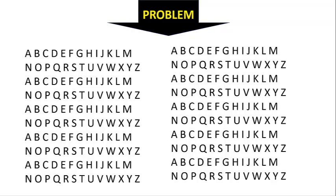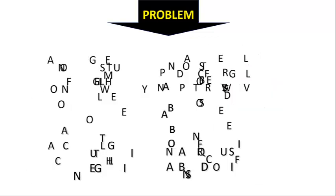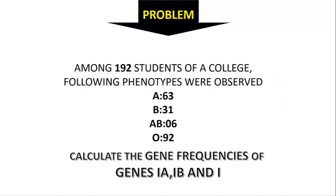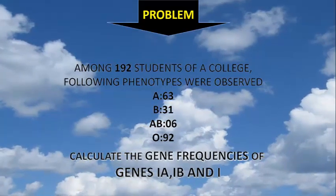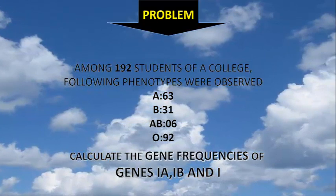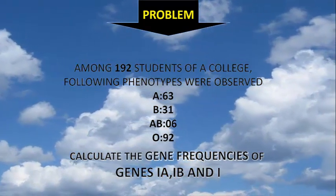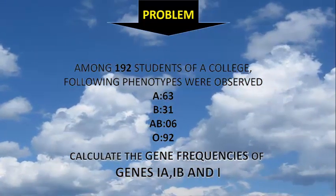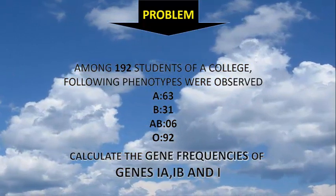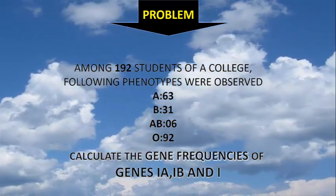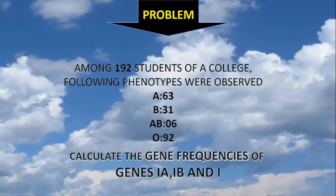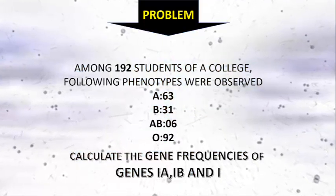Welcome back friends. Here at the problem page, the problem is hidden inside it. You can clearly see that this question is based on blood groups. Among 192 students of a college, the following phenotypes were observed: blood group A — 36, blood group B — 31, AB — 6, and blood group O — 92 students. The question is: calculate the gene frequencies of genes I-A, I-B, and I-O.